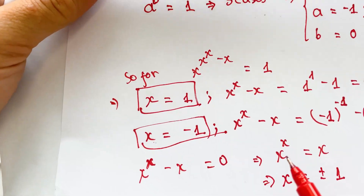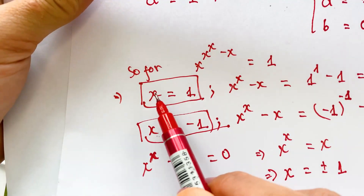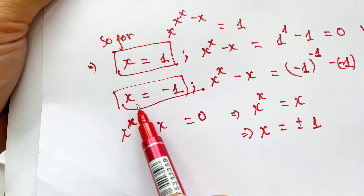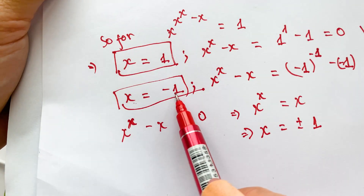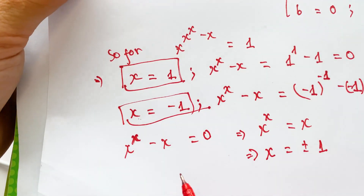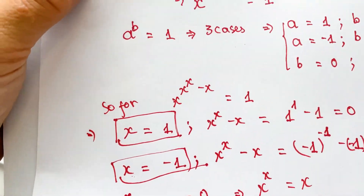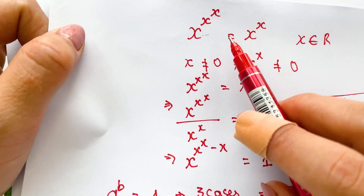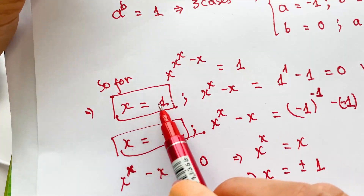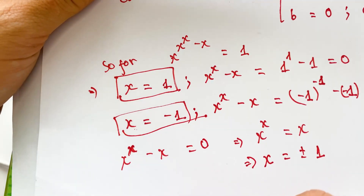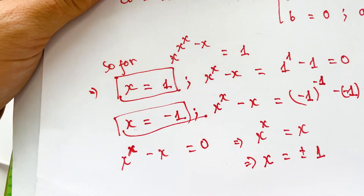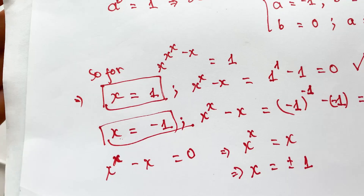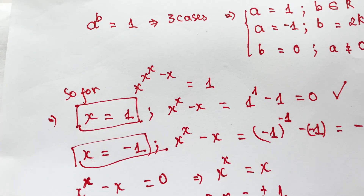Combining all cases, the solutions are x = 1 and x = -1. Therefore the original equation has two solutions: x = 1 and x = -1. Thank you for watching my video, don't forget to subscribe to my channel. Love you all, bye bye!